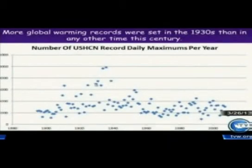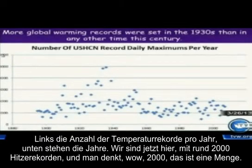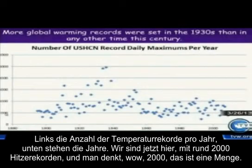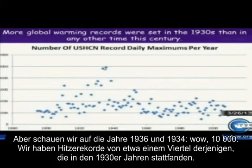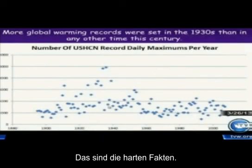If you plot that data, this is what it looks like — the number of temperature records that were broken in any given year. Right now we're breaking somewhere around 2,000 temperature records for warmth. You might think 2,000 is a lot, but look at what was happening in 1936 and 1934 — 10,000 records. We are setting record highs at a rate of only about a fourth of those that occurred in the 1930s. This is hard data.